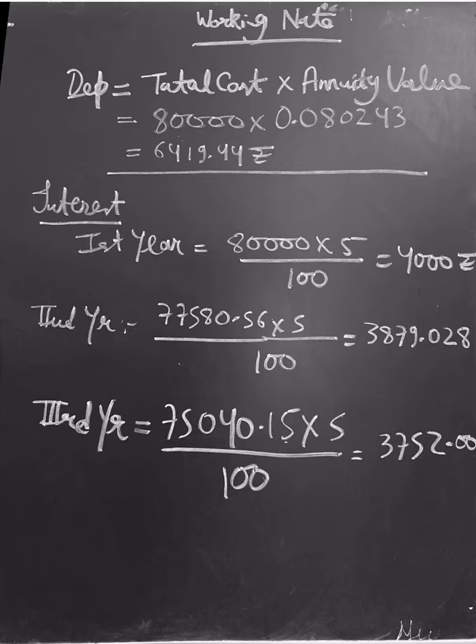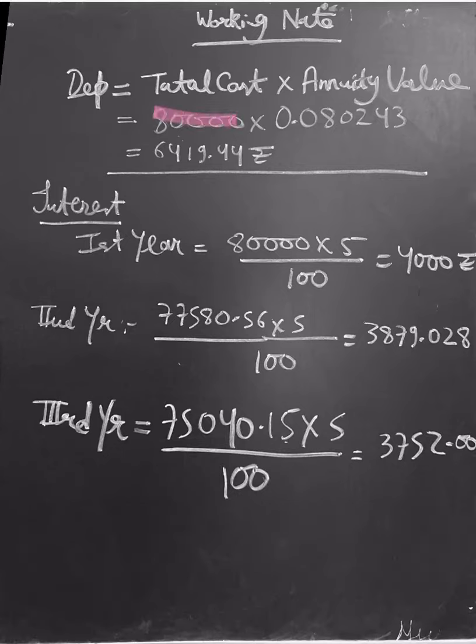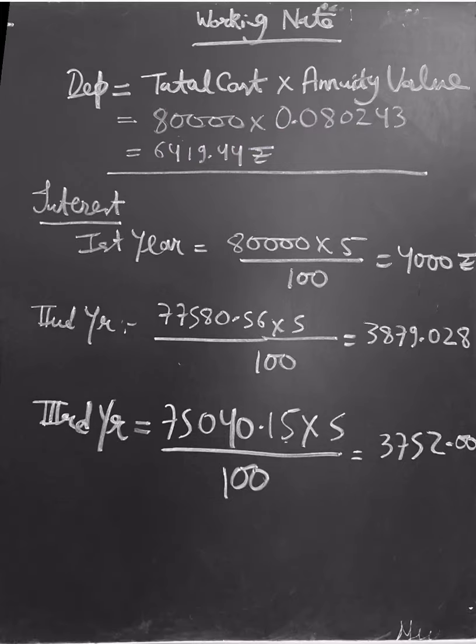Cost was 80,000 and annuity value was 0.080243. When we multiply, we get 6,419.44. This will be our depreciation for every year.